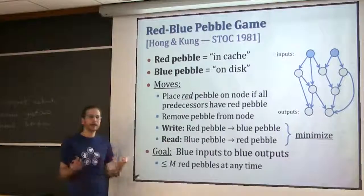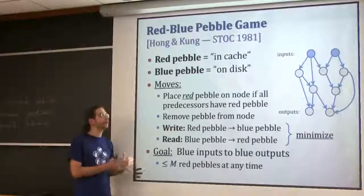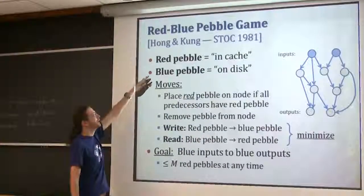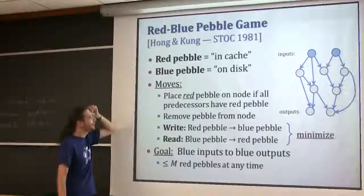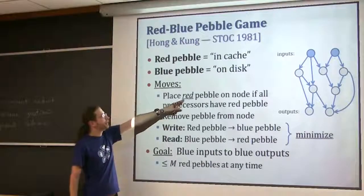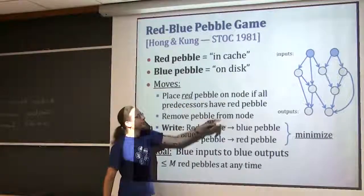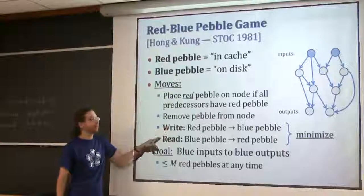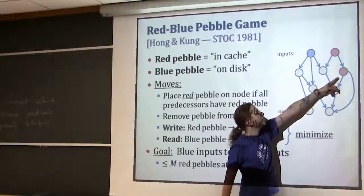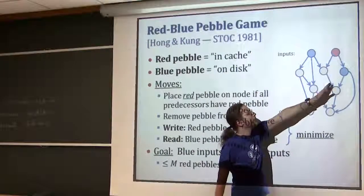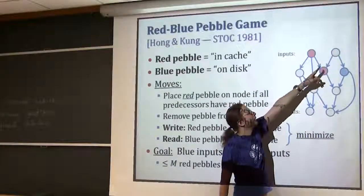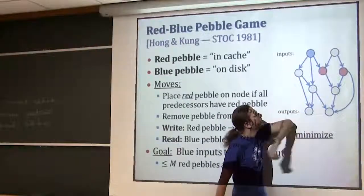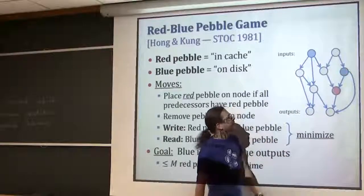Hong and Kung wanted to use two colors of pebbles - one to represent being on the shallower level of the memory hierarchy in cache, and the other to say you're on disk. Red pebbles are in cache - that's the hot stuff. Blue pebbles are our disk - that's the cold stuff. You can place a red pebble if your predecessors have red pebbles. We start with the inputs being blue. For unit cost, you can convert any red pebble to a blue pebble (write to disk), or any blue pebble to a red pebble (read from disk).